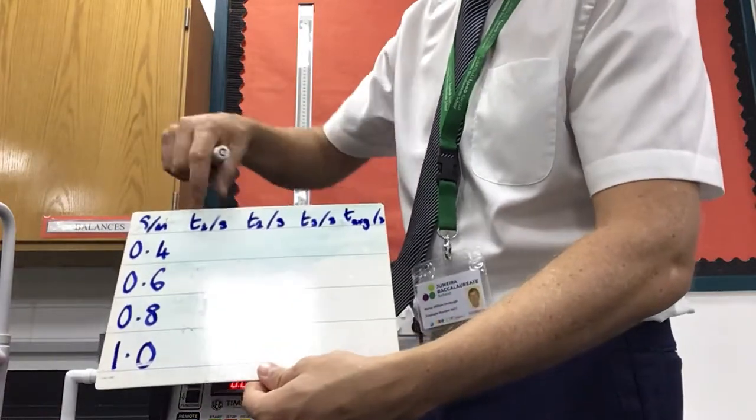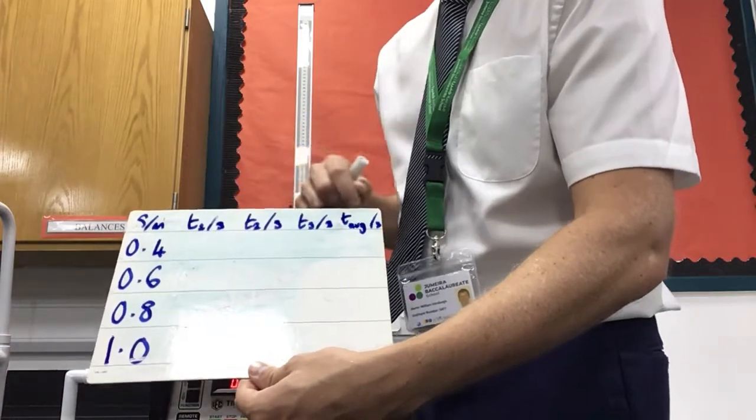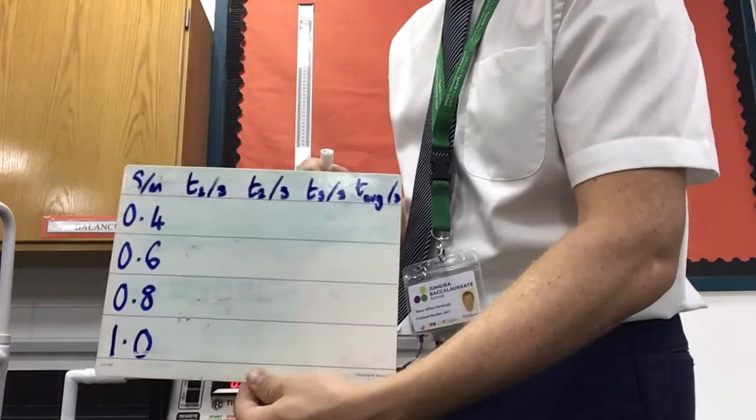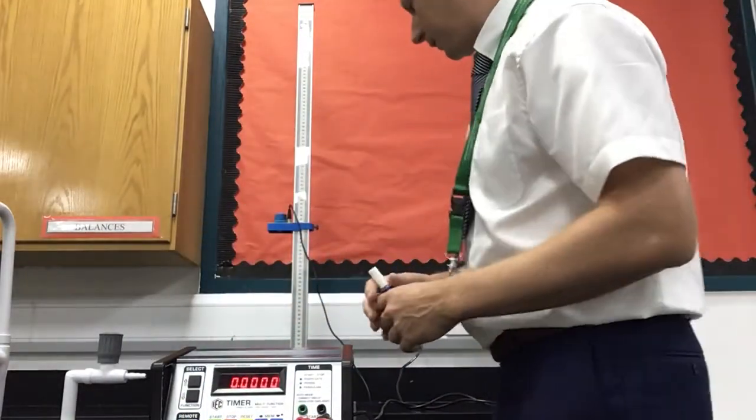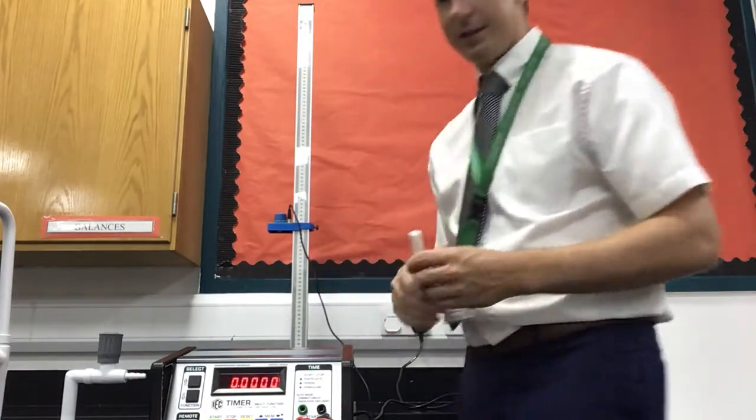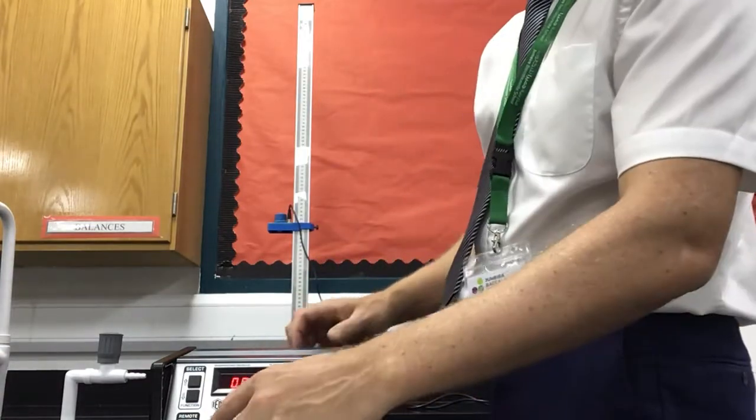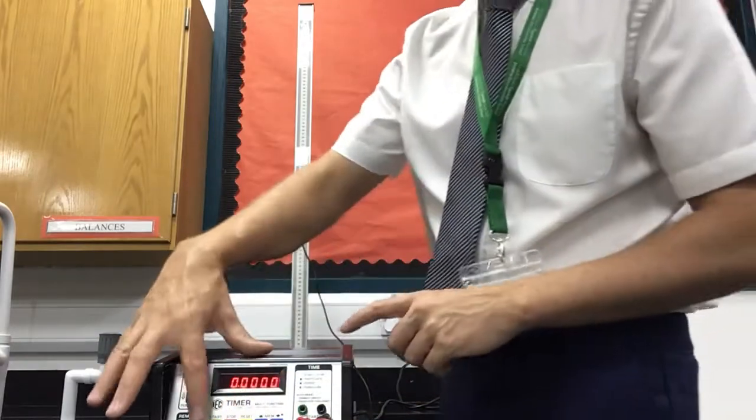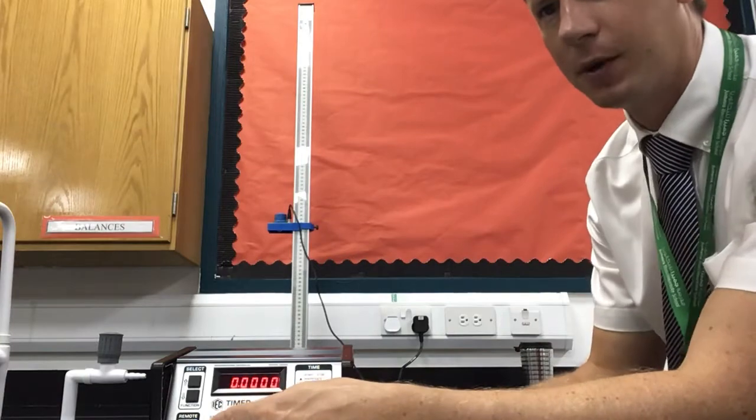If you have space, you can just put time up the top, time in seconds, then do 1, 2, 3, average. I didn't have space on my little board. So you'll see the times. And so for the first one, it's set to 0.4 metres. I'm just going to do that three times. So I press start, and you'll see the ball drop.